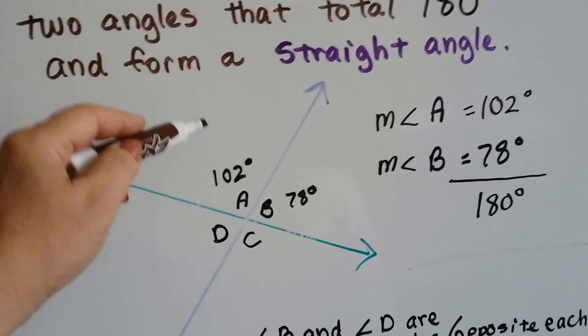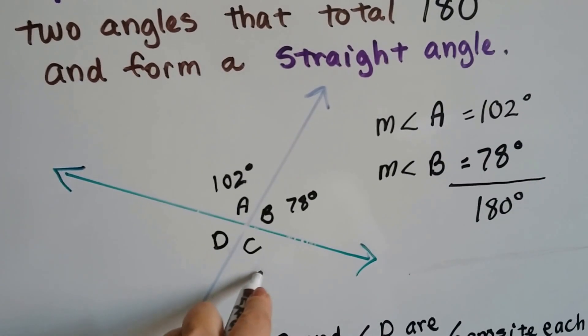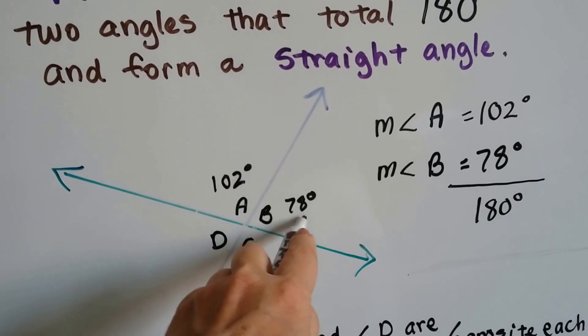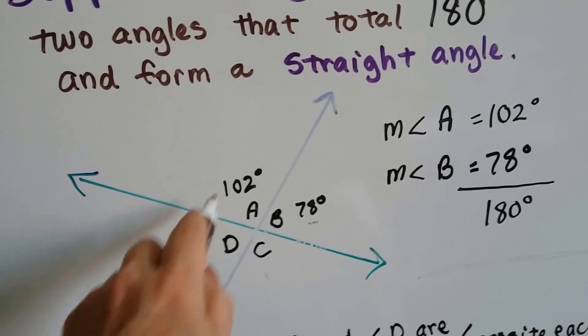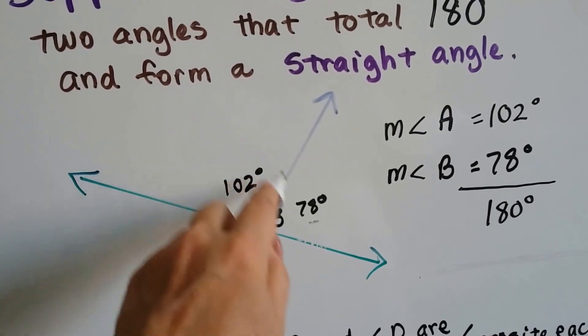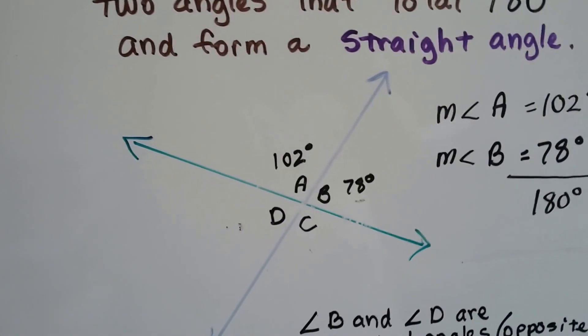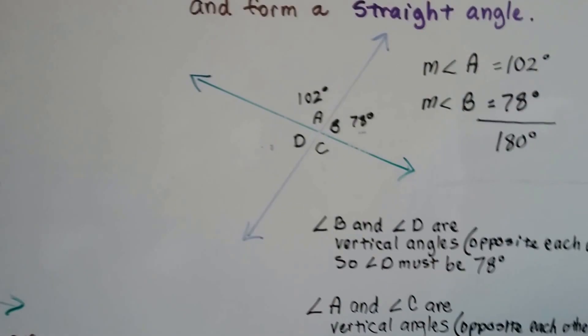Now, because these are vertical angles, A and C, that means C is 102, and because B and D are vertical angles, that means D is 78. So if you just have one angle, you'll be able to tell what all the other three angles are. It's kind of neat, isn't it?